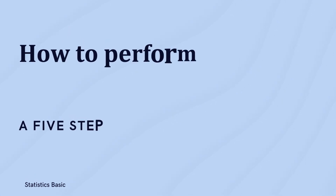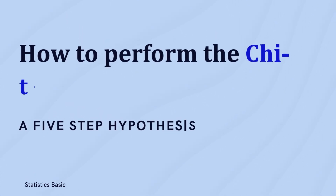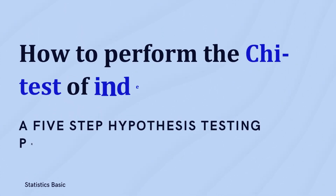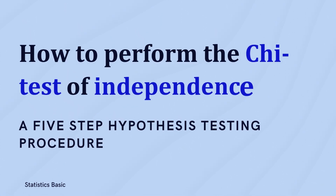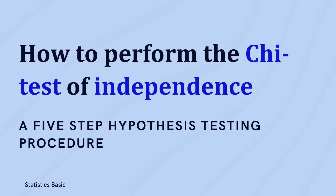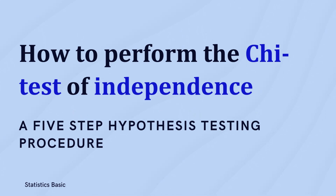In this video, we'll explore how to perform a chi-square test to analyze whether there's a relationship between two categorical variables. We'll follow a five-step hypothesis testing procedure to assess this association.